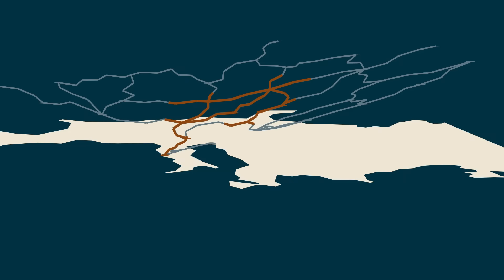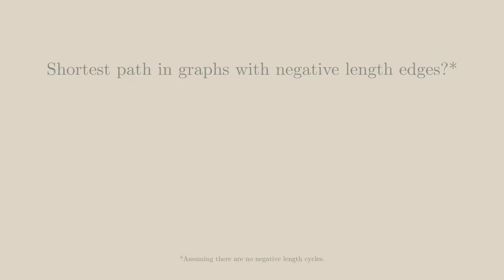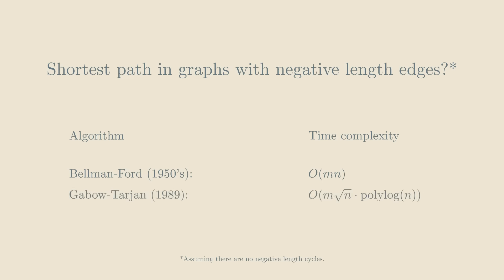The last reason why I like the potential reweighting approach to A-star is that potentials have many other applications. Here's my favorite example. If you try to solve the shortest path on graphs that may have edges with negative lengths, you can't use Dijkstra's algorithm anymore. In fact, we didn't have a very satisfying algorithm for this problem until a few months back. There is a new, fast algorithm for the problem and it's based on using the potential reweighting trick to convert the input edge lengths into new ones that are non-negative.